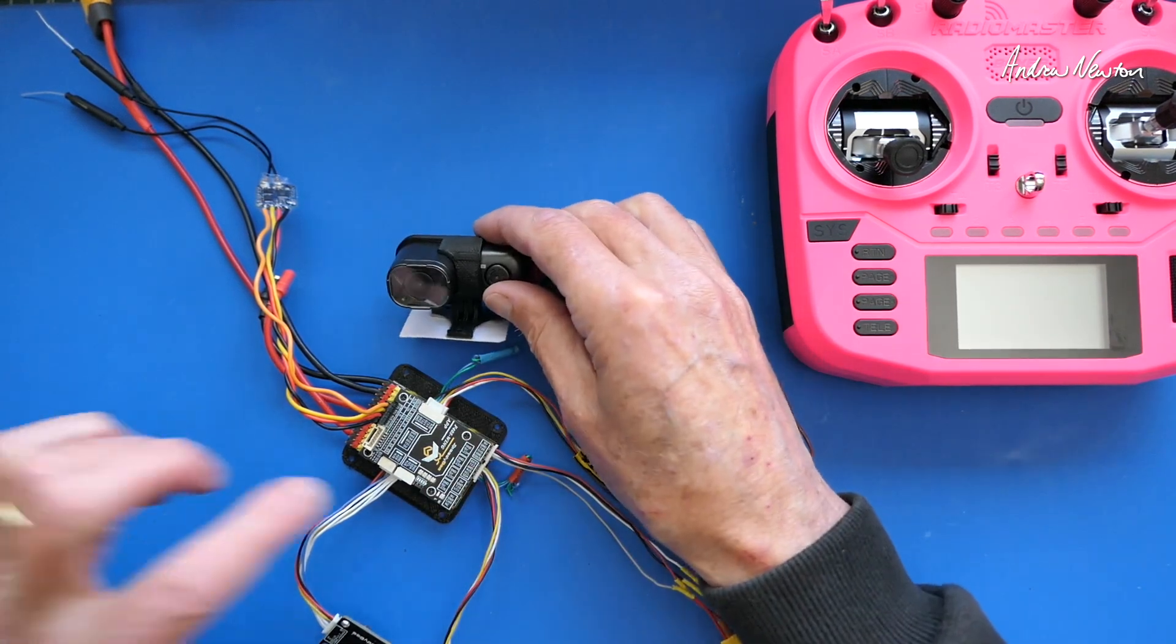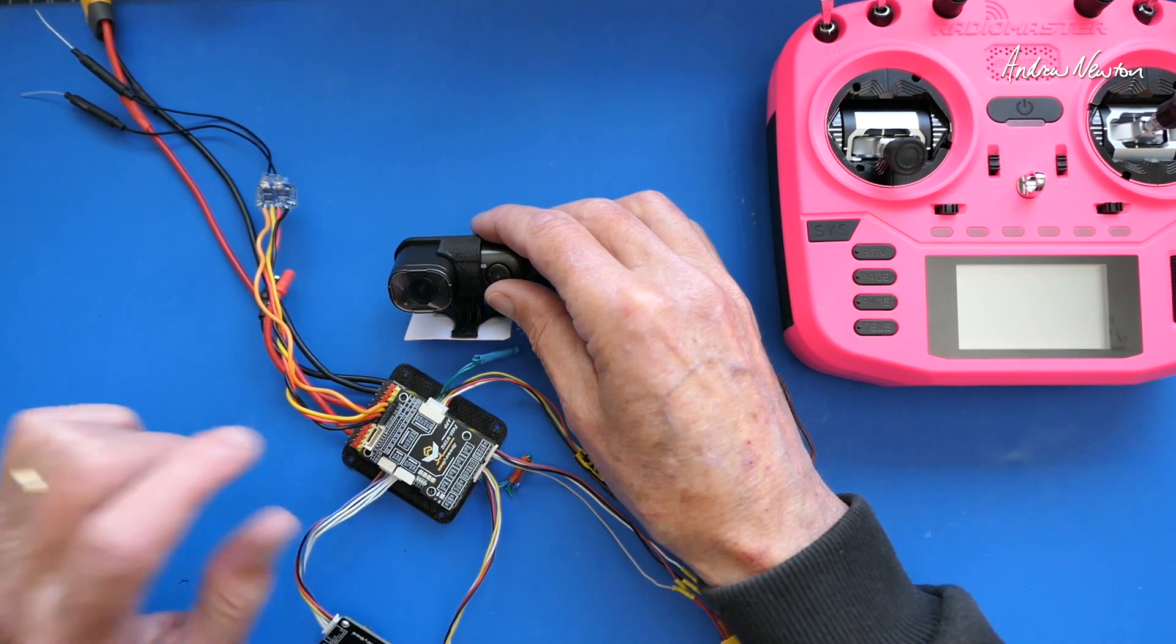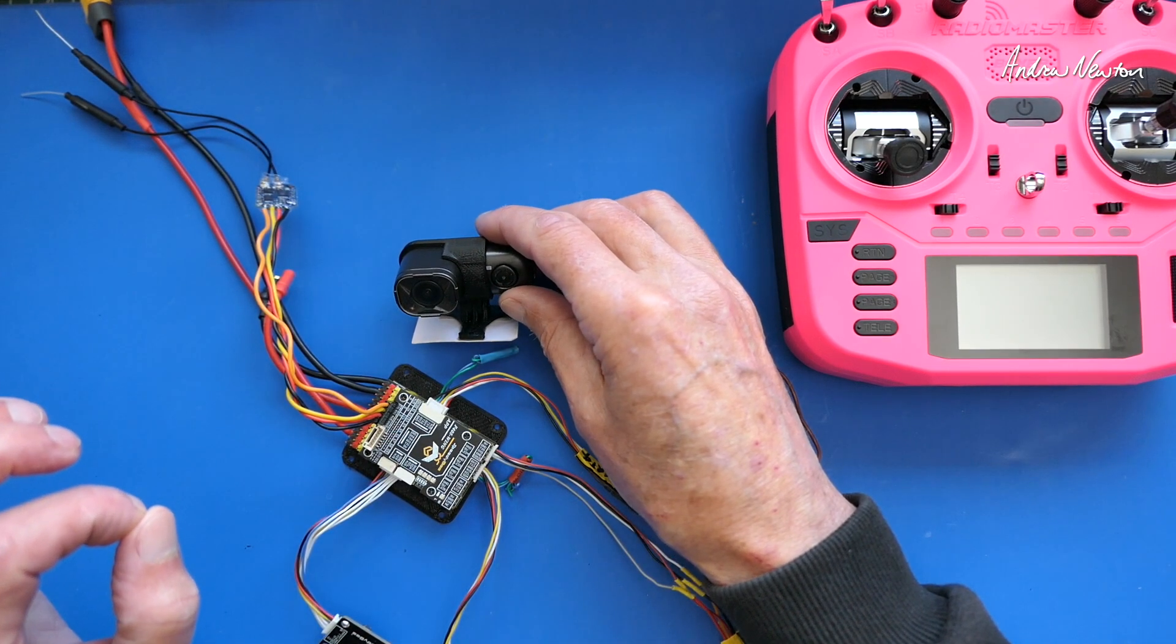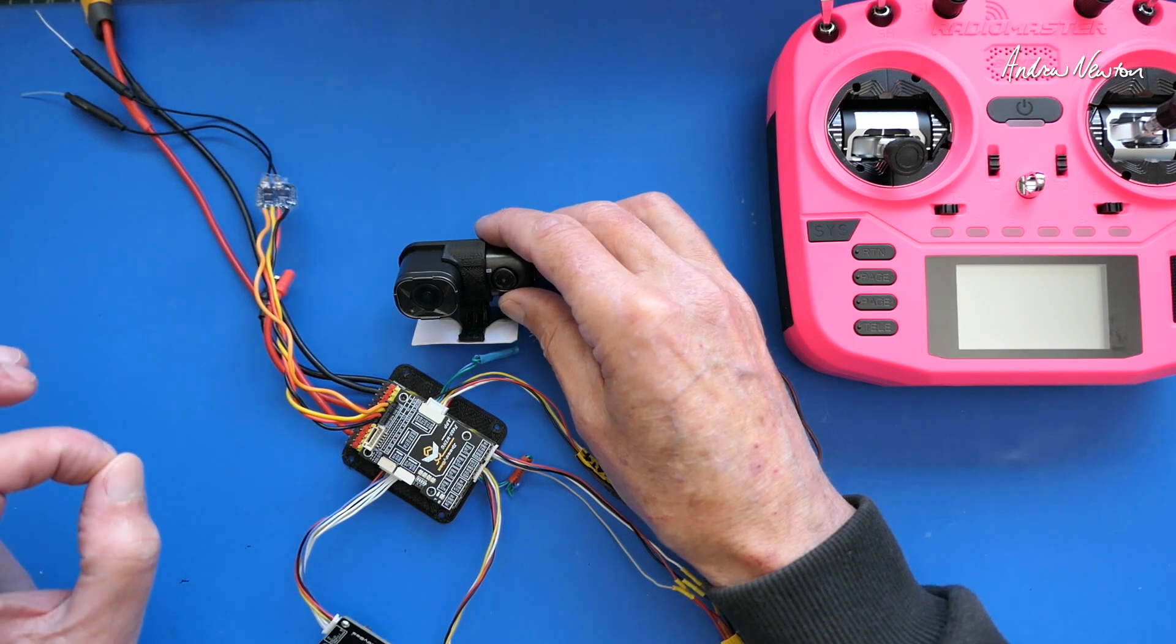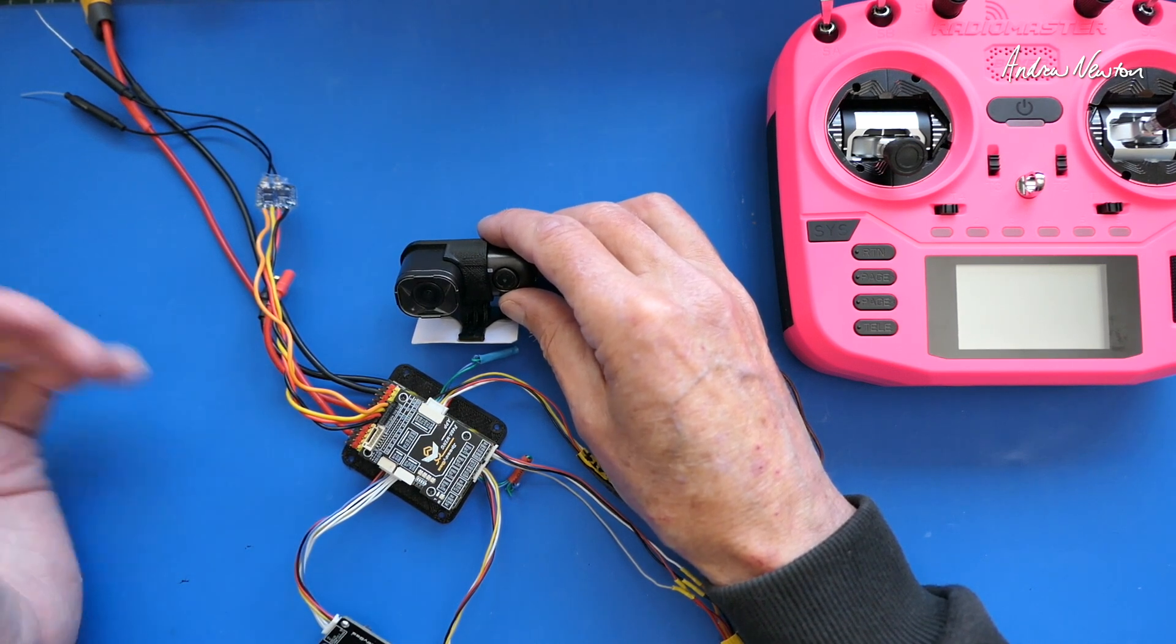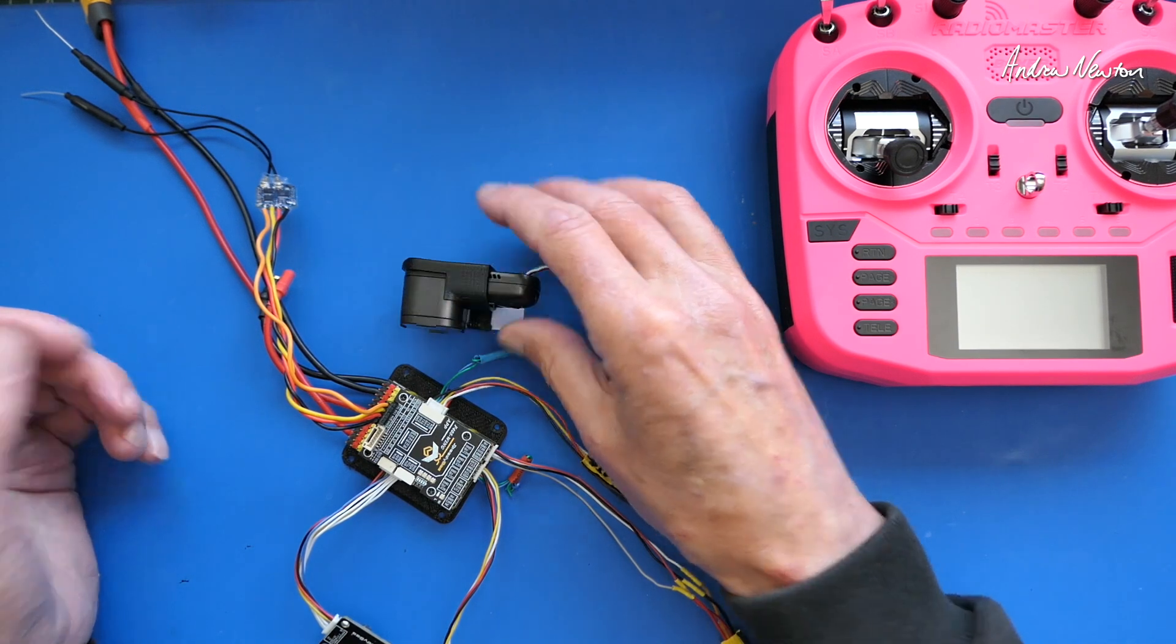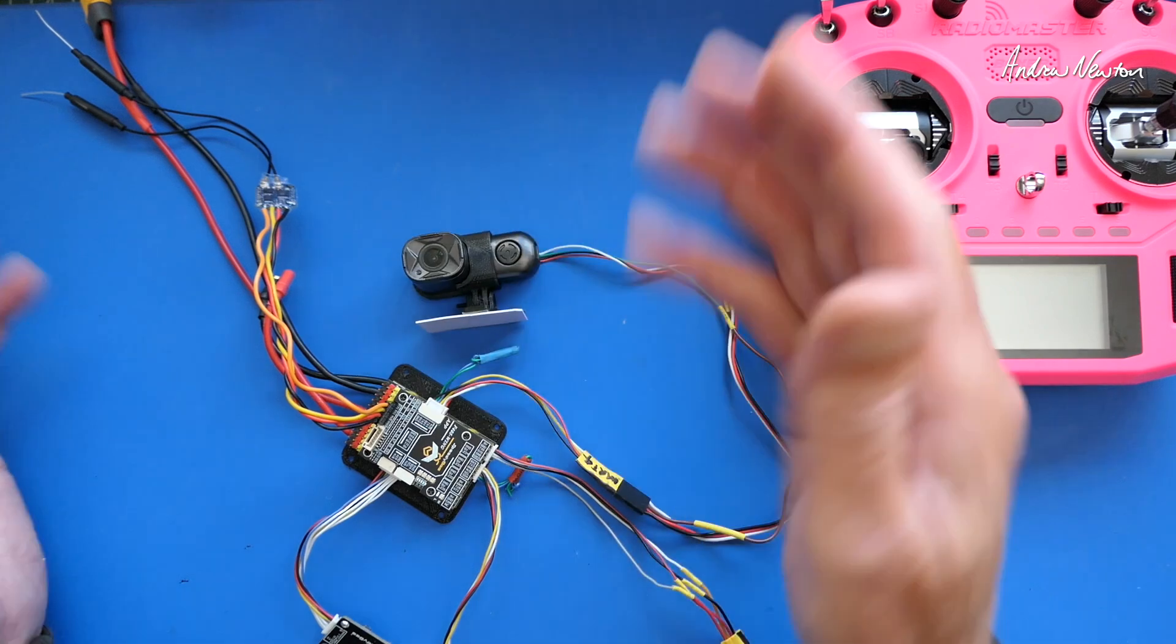There's a little quirk with the UART control of the Runcam Thumb. You have to activate it by switching a switch on and off, then stop recording by switching a switch on and off again. That just gets confusing and you can end up not knowing whether you're recording or not. I find it a little bit confusing but anyway it's easy enough to set up.